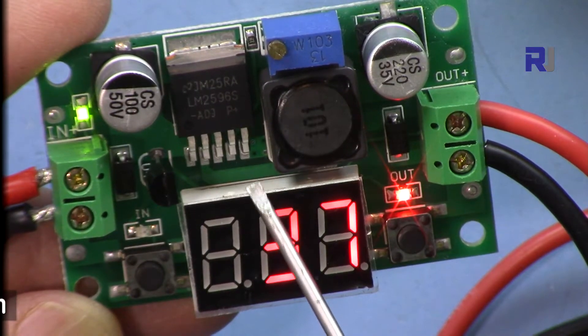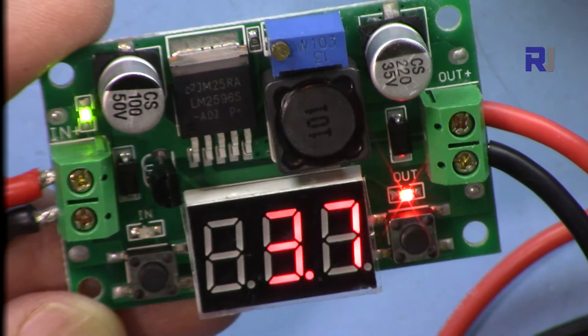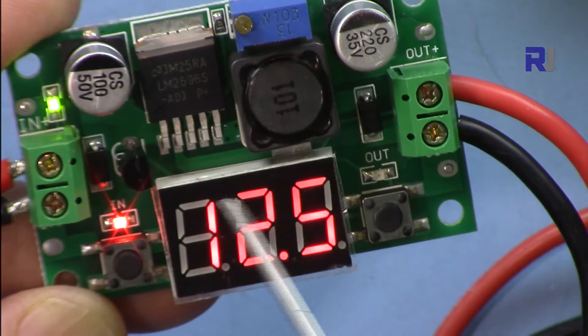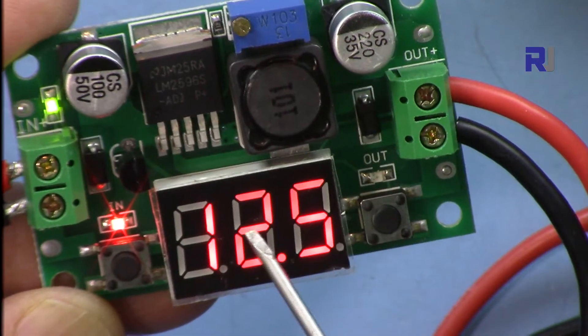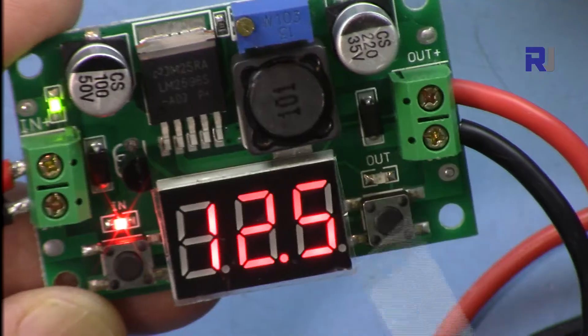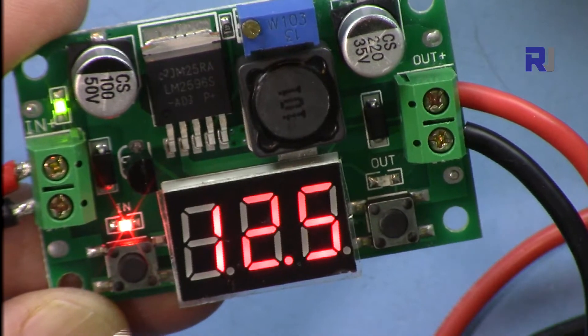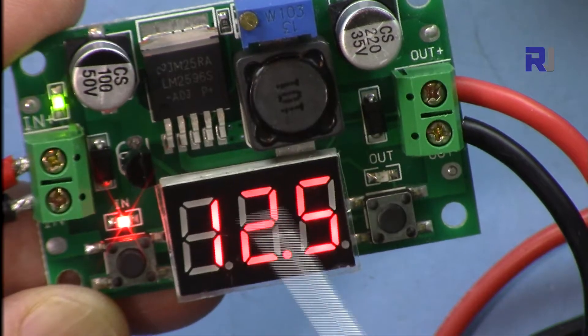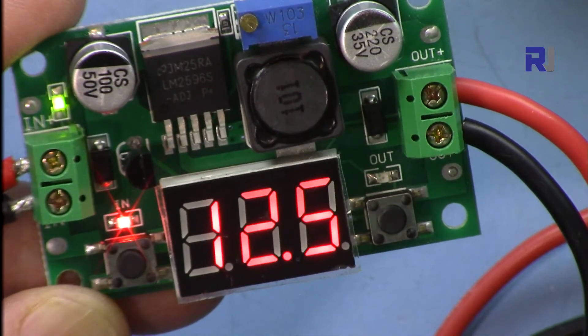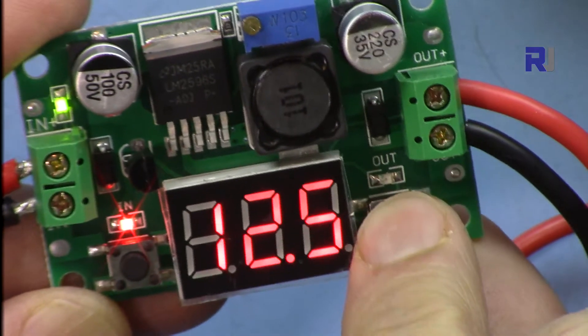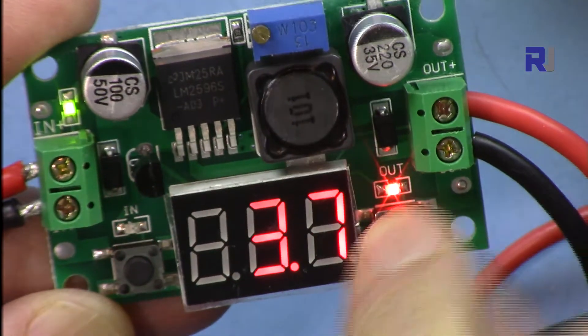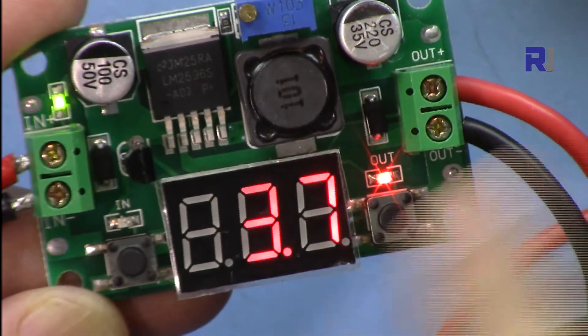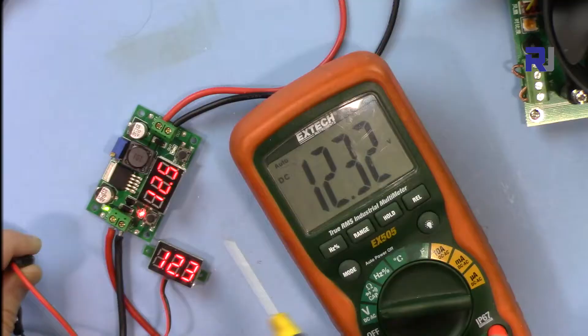This uses the LM2596 regulator with an LED display that shows the voltage input and output depending on selecting the switch. Now it shows the input voltage is 12.5 volts. If I want to see the output, I just press this and the light will be on. This shows the output is now 3.7 volts.